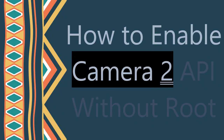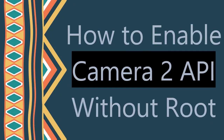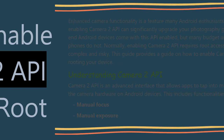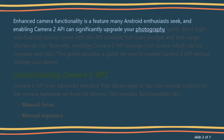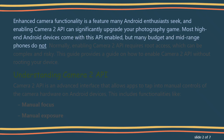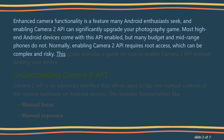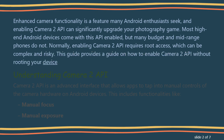How to Enable Camera 2 API Without Root. Enhanced camera functionality is a feature many Android enthusiasts seek, and enabling Camera 2 API can significantly upgrade your photography game. Most high-end Android devices come with this API enabled, but many budget and mid-range phones do not. Normally, enabling Camera 2 API requires root access, which can be complex and risky. This guide provides a walkthrough on how to enable Camera 2 API without rooting your device.